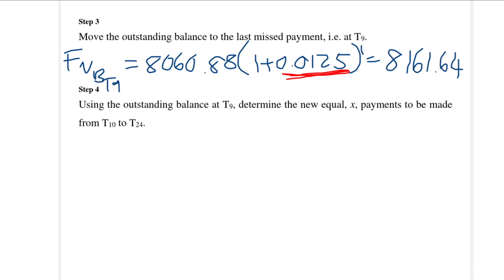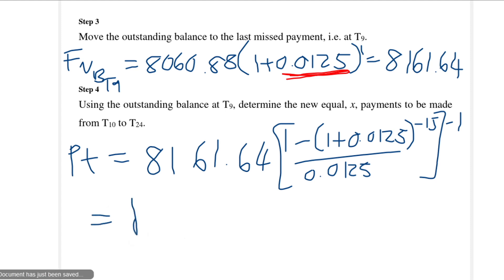And then finally in the last step we will use this balance as a present value of a loan to get the equal payments. So the equal payments from T10 to T24 will then be 600 rands and 10 cents.